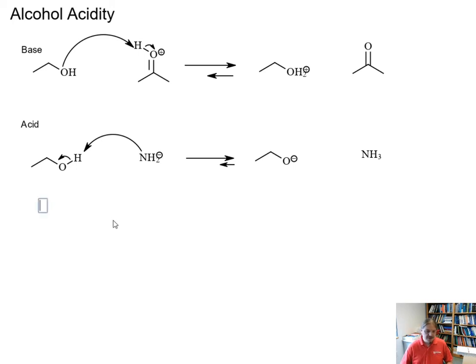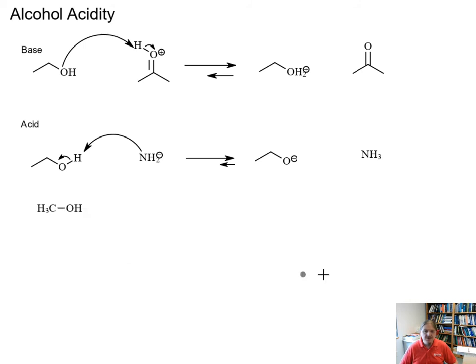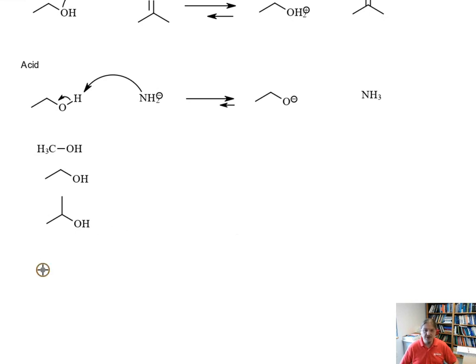What I am going to do though is draw for you several alcohols: methanol, ethanol, isopropanol or 2-propanol, tert-butyl alcohol or 2-methyl-2-butanol and we're going to look at the pKa values of these several alcohols.